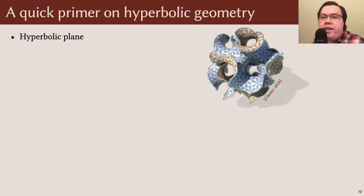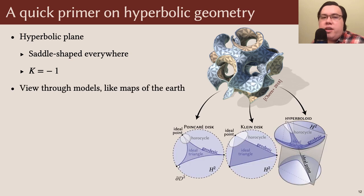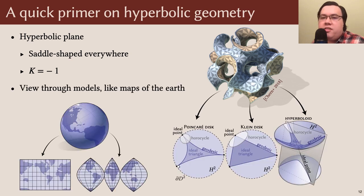In order to explain where these Ptolemy flips come from, I'll have to introduce a little bit of hyperbolic geometry. The hyperbolic plane is a surface that's saddle-shaped at each point. Formally, we say it has constant Gaussian curvature minus one. In order to study the hyperbolic plane, mathematicians use various models, in the same way that cartographers use various map projections to illustrate different features of the Earth. The important models now will be the Poincaré and Klein disks, although the hyperboloid model will also play a key role later.